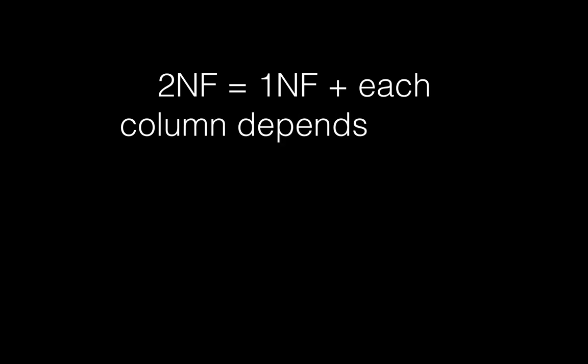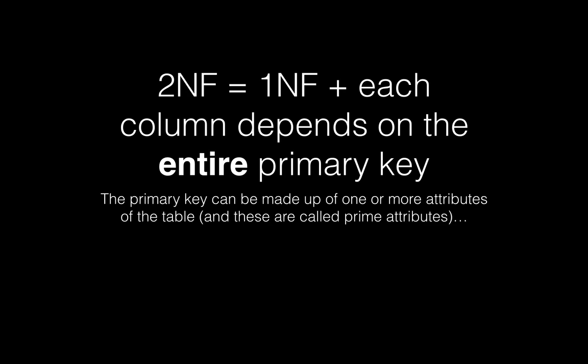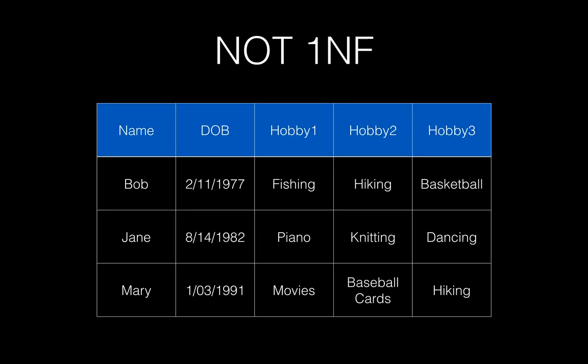Let's talk about the second normal form. The second normal form requires that we comply with the first normal form, meaning that it's a superset of the first normal form, with an additional qualification that each column depends on the entire primary key. The primary key can be made up of one or more attributes of the table, and these are called prime attributes.